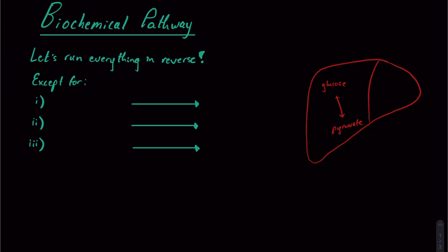And for the most part, running everything in reverse makes a lot of sense, except for there are three more finicky enzymes that are not going to want to run in reverse. They're irreversible enzymes in this process and also happen to be rate limiting, largely for this reason.